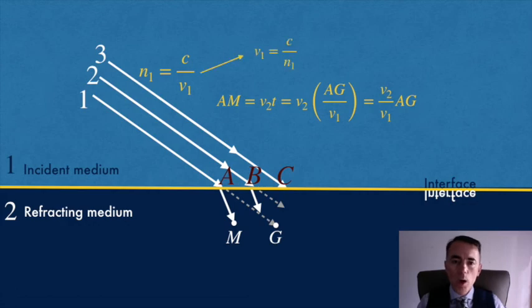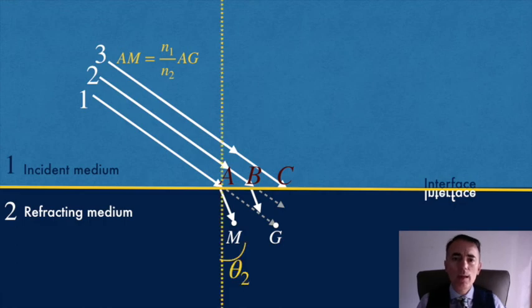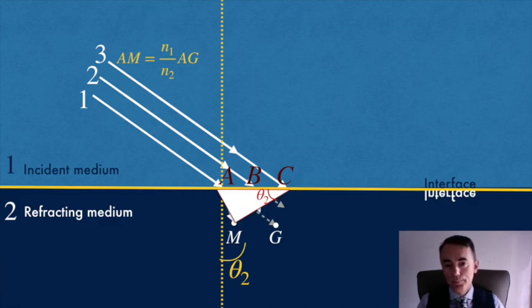If I write V sub 1 as C over N sub 1, now we need to write AM and AG in terms of the incident angle theta 1 and the refracted angle theta 2. The angle theta 2 is the angle between segments AC and CM. While the angle theta 1 is the angle between segments AC and AF.